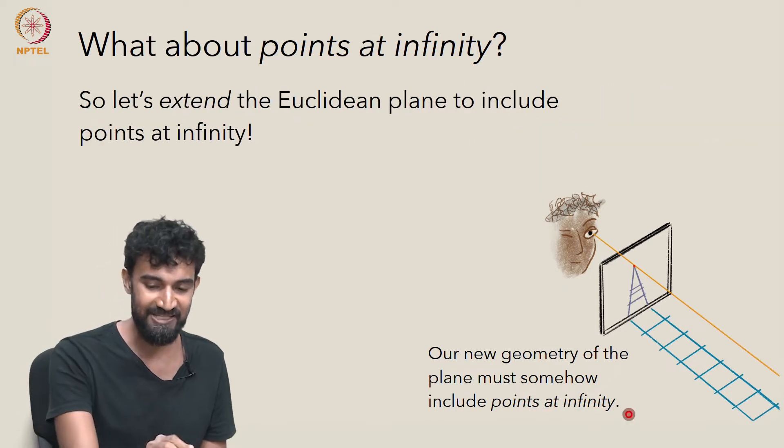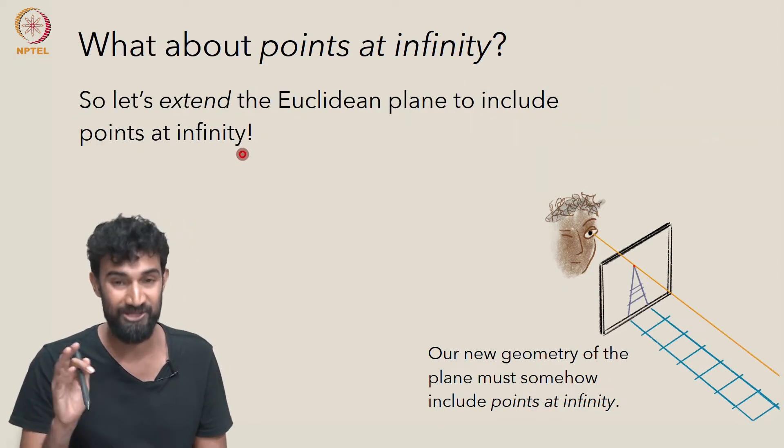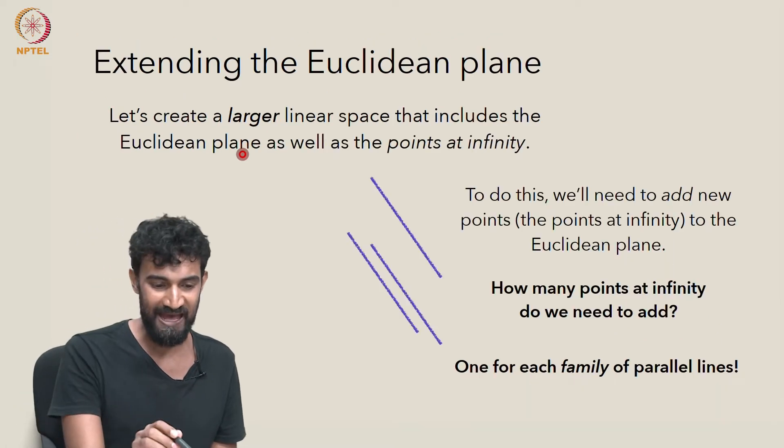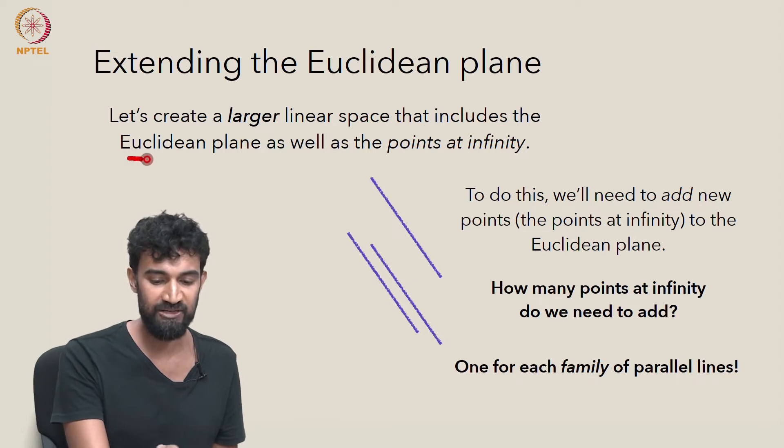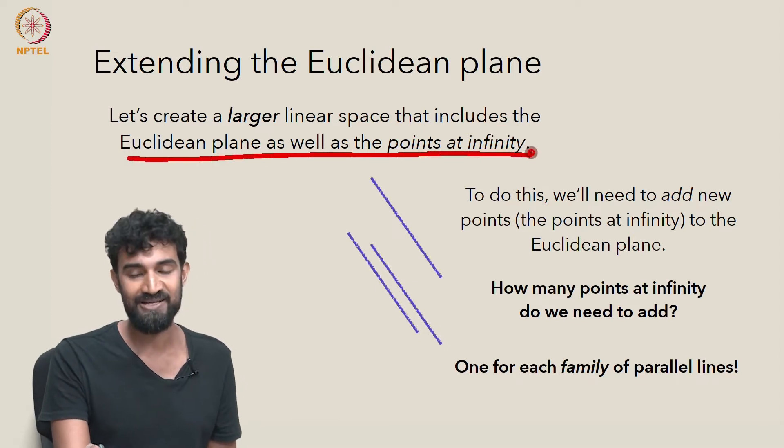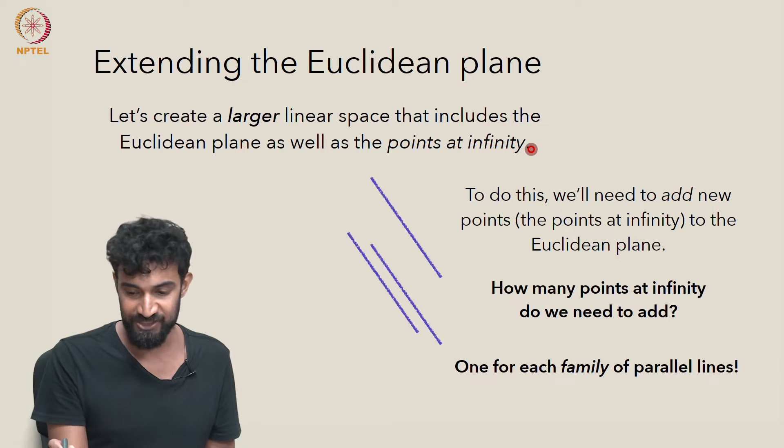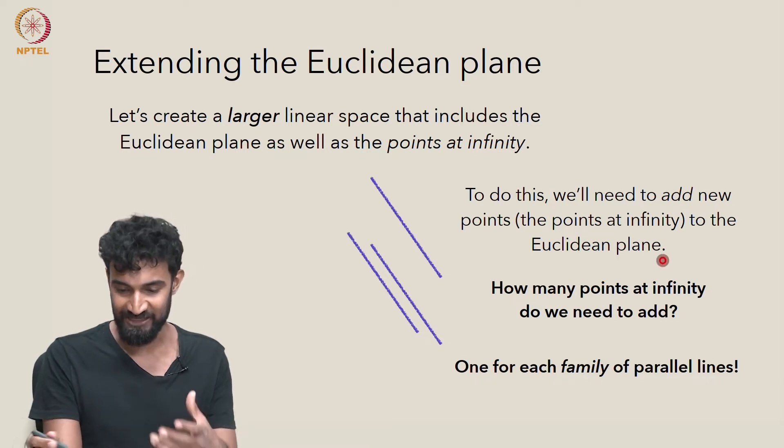So let's extend the Euclidean plane to include points at infinity. In other words, let's create a larger linear space that includes the Euclidean plane as well as the points at infinity. And to do this, we'll just start adding new points.